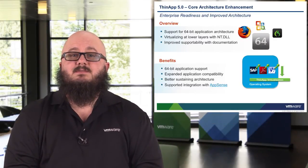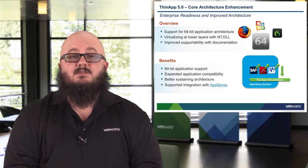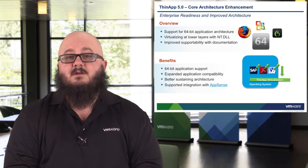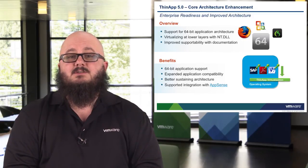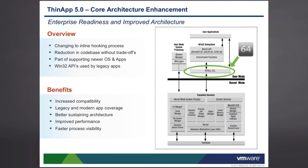With the introduction of ThinApp 5, we saw improvements to the core architecture. These included support for 64-bit applications to run on 64-bit operating systems, improved virtualization for lower layers with NT.dll, and improved supportability with better documentation, meaning you should be able to package more apps far more easily with better guidance. These benefits resulted in expanded application compatibility, a better sustaining architecture, and improved supportability with AppSense through integration with the actual product. The Windows 32 APIs used by legacy apps were also improved in their ability to hook into the architecture, meaning overall a greater number of apps should be able to be ThinApp'd.